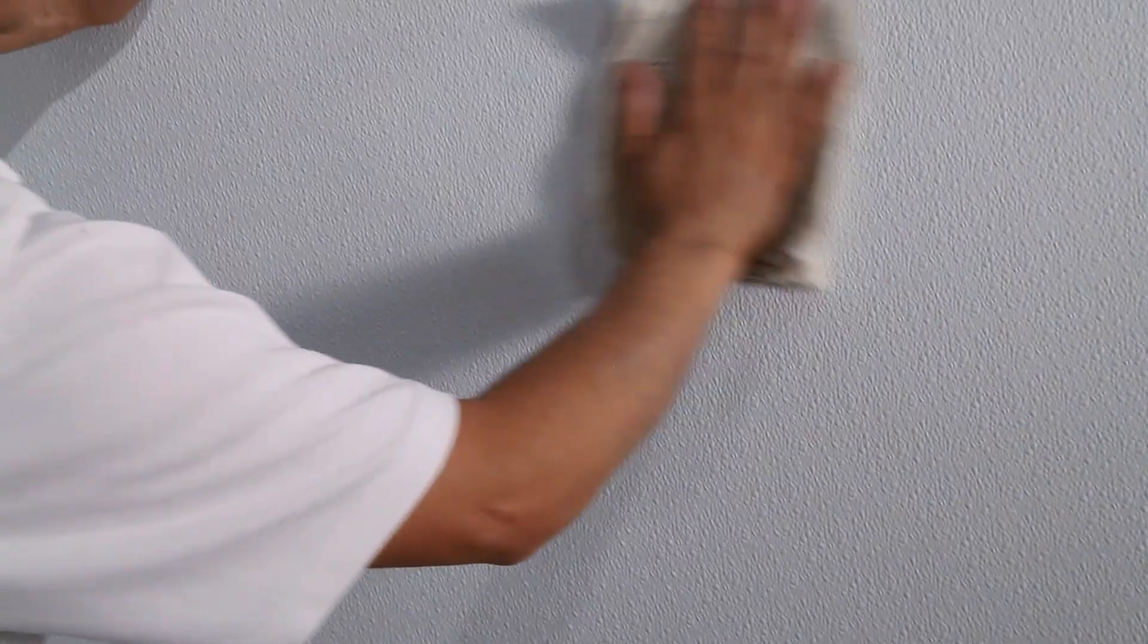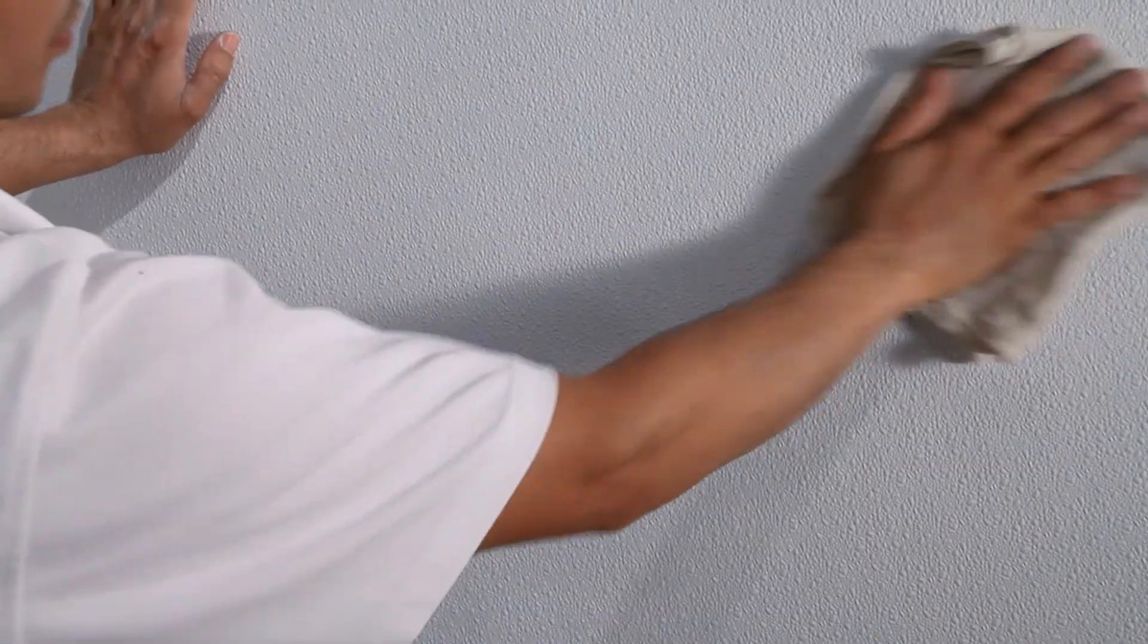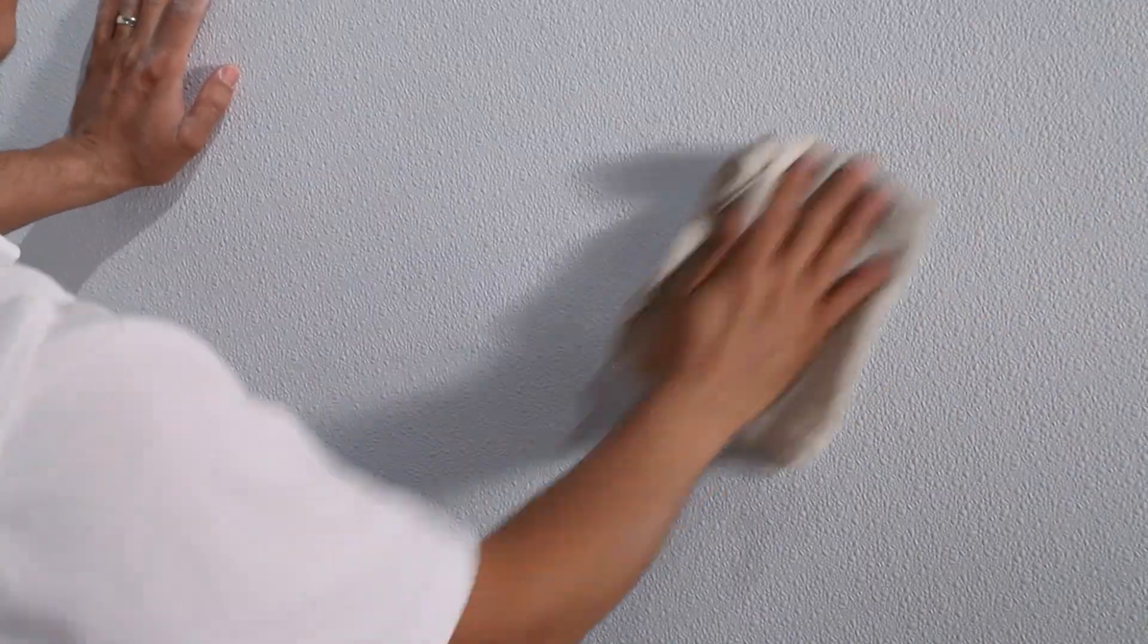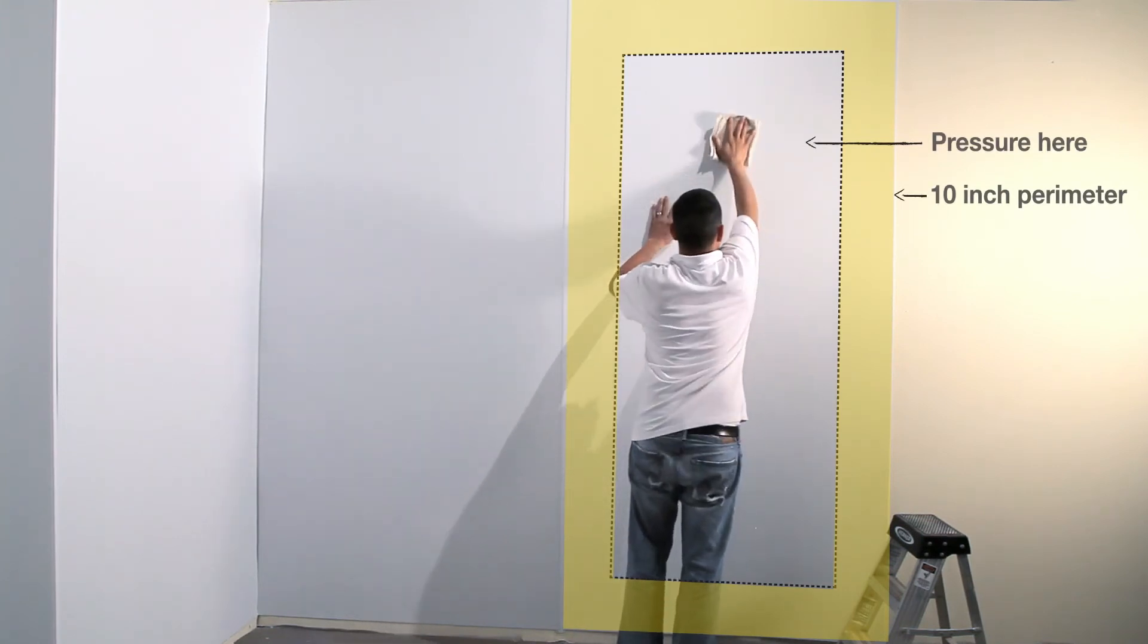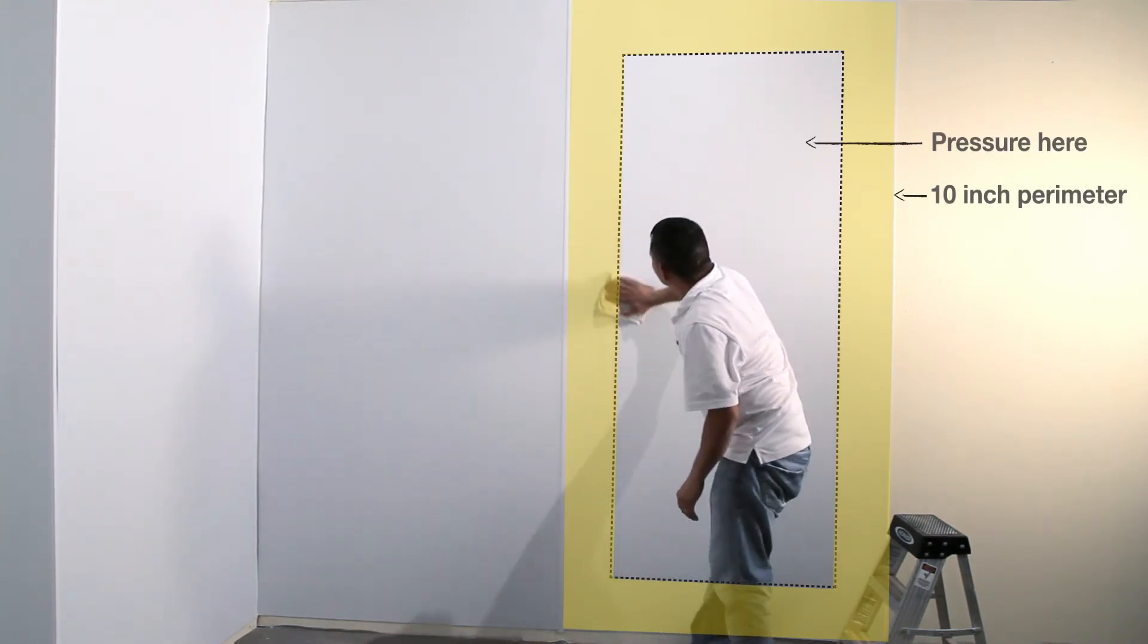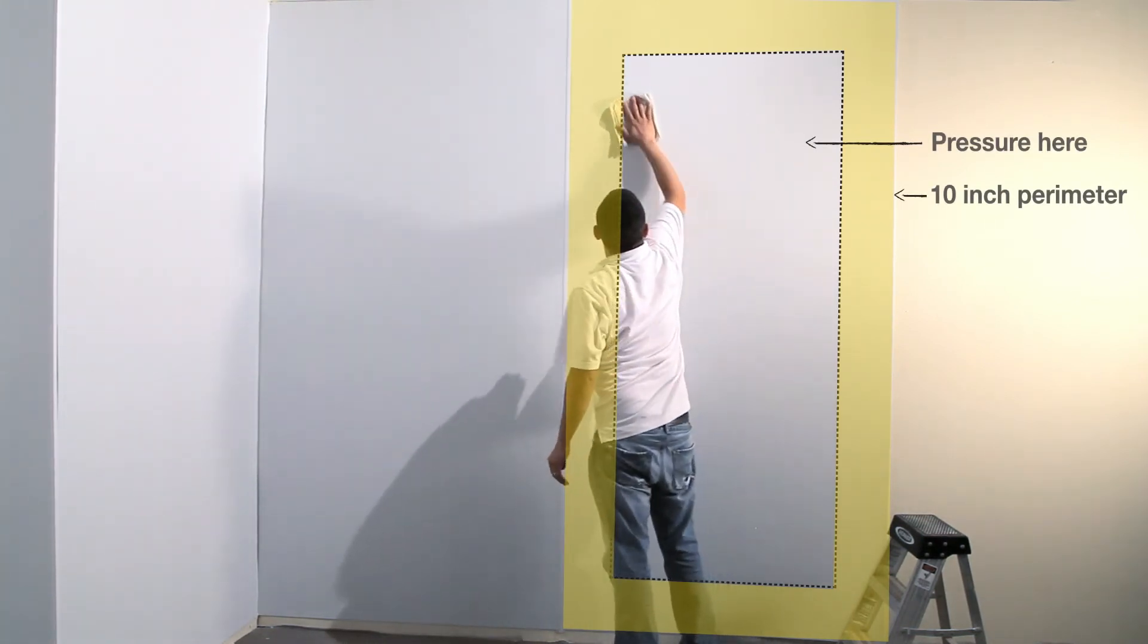Once the sheet is correctly positioned, apply firm pressure in the middle of the sheet to complete the bond in this area. Do not apply pressure around a 10-inch perimeter for installing trim around the edges.